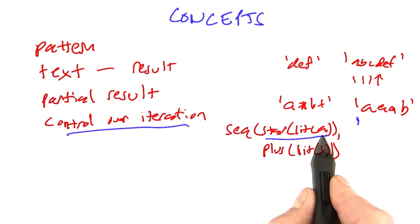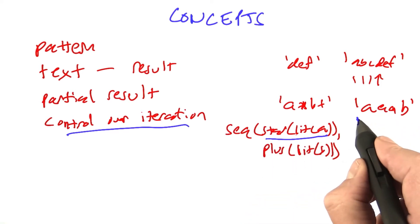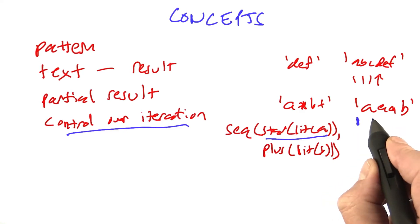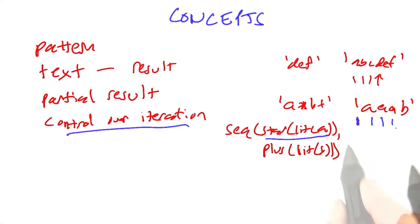I have to say that star of literal a can match in more than one location. It can match with 0 instances of a, with 1, with 2, with 3, and it's only after 3 that then we can match the second part, find the b, and then find that the whole expression matches.